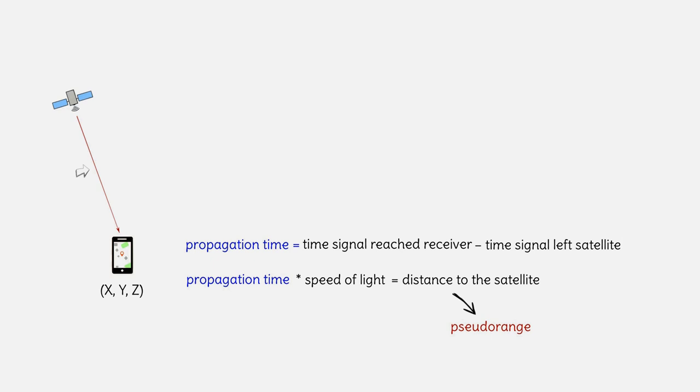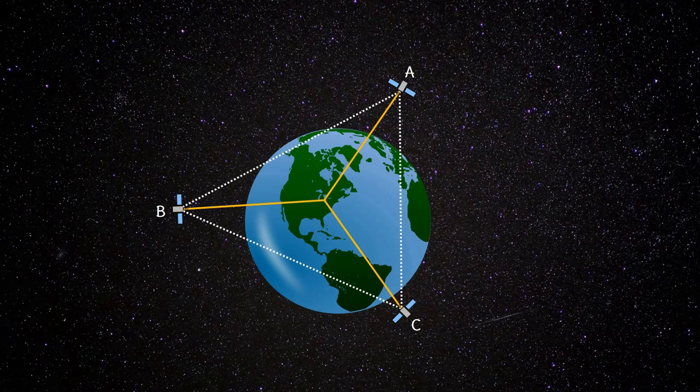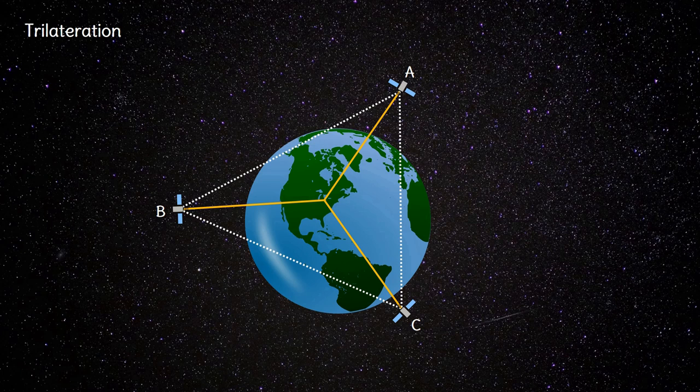To estimate the user's three coordinates x, y and z we need measurements from three satellites and their exact positions. The method is called trilateration.